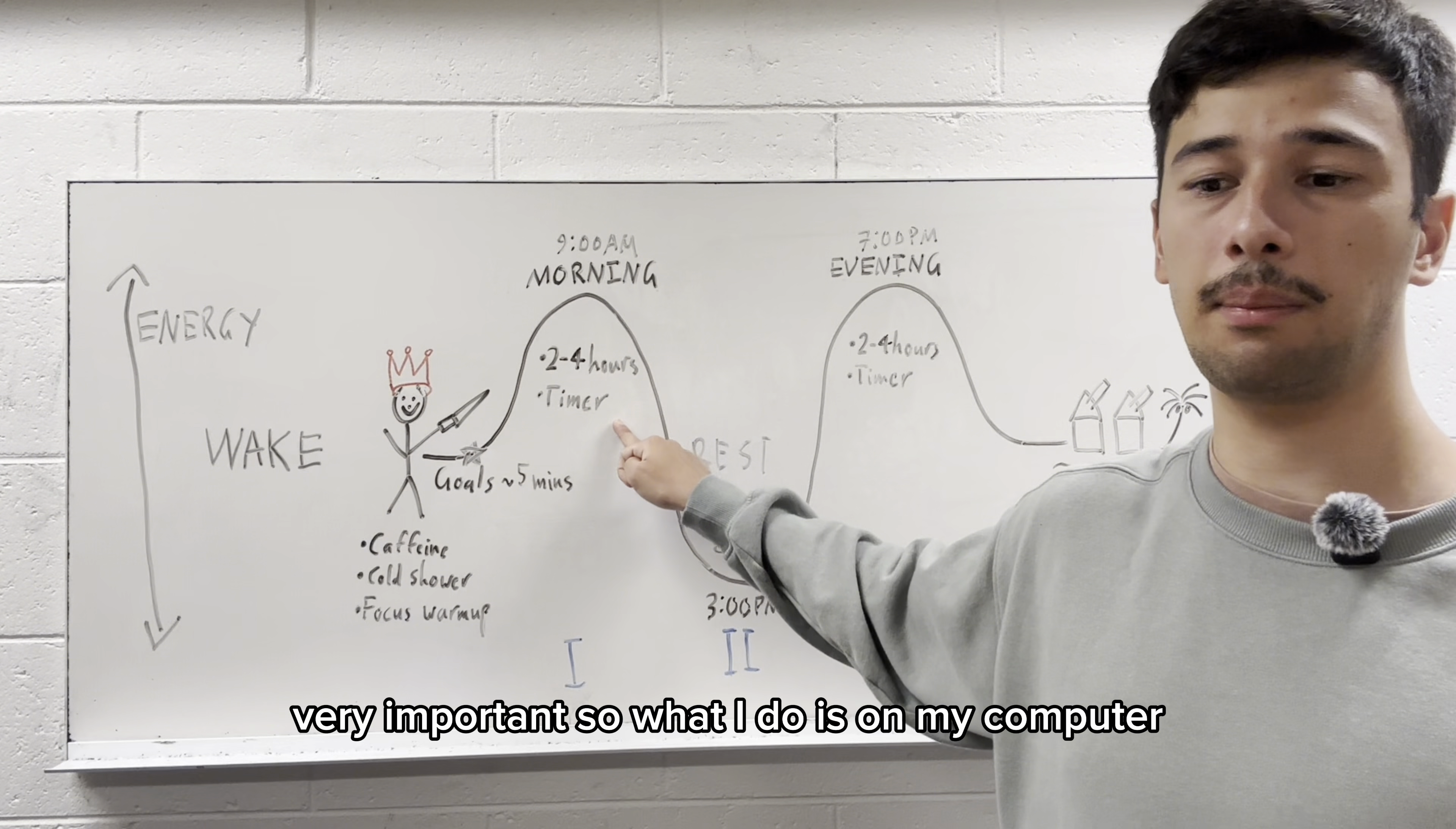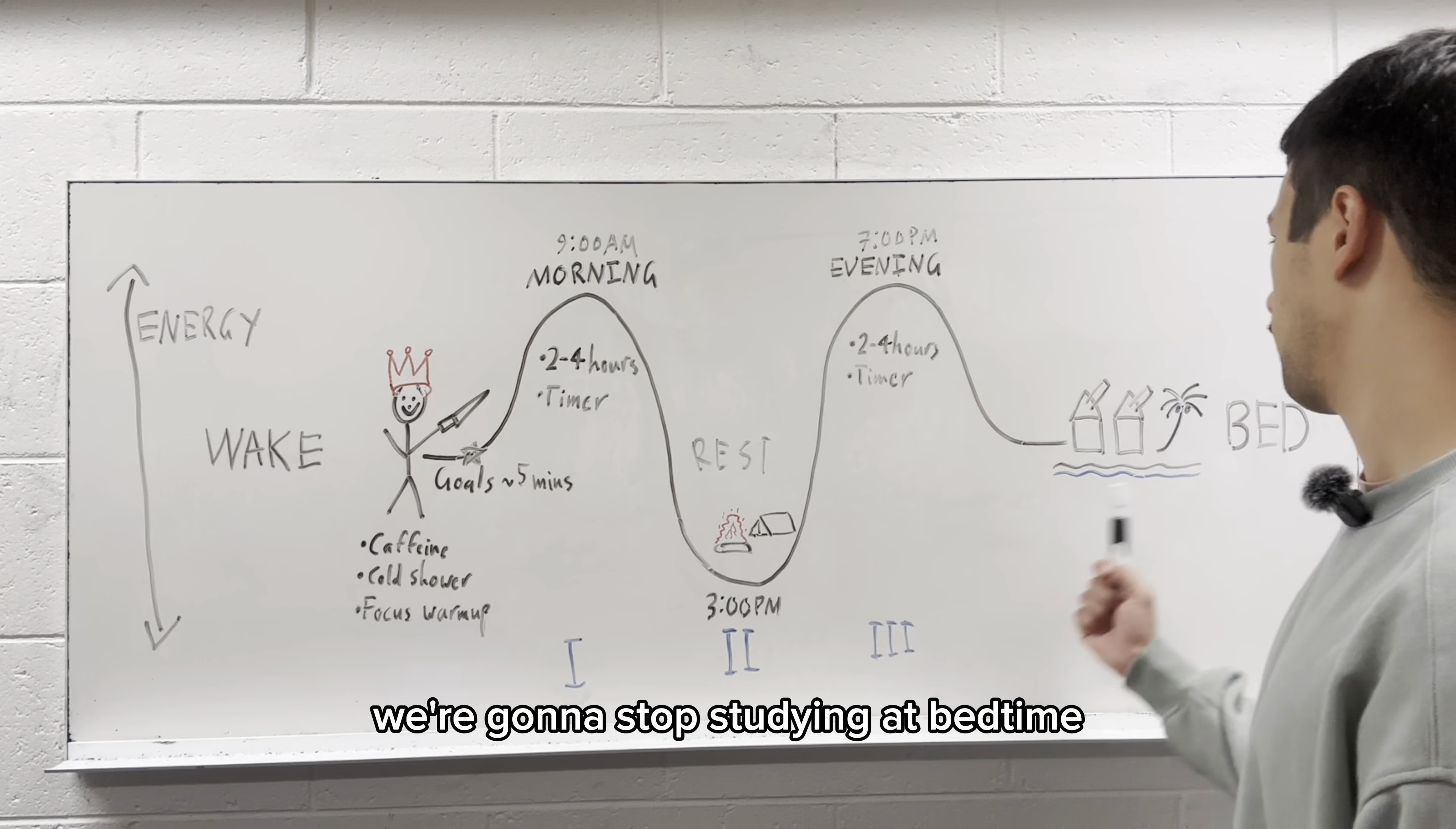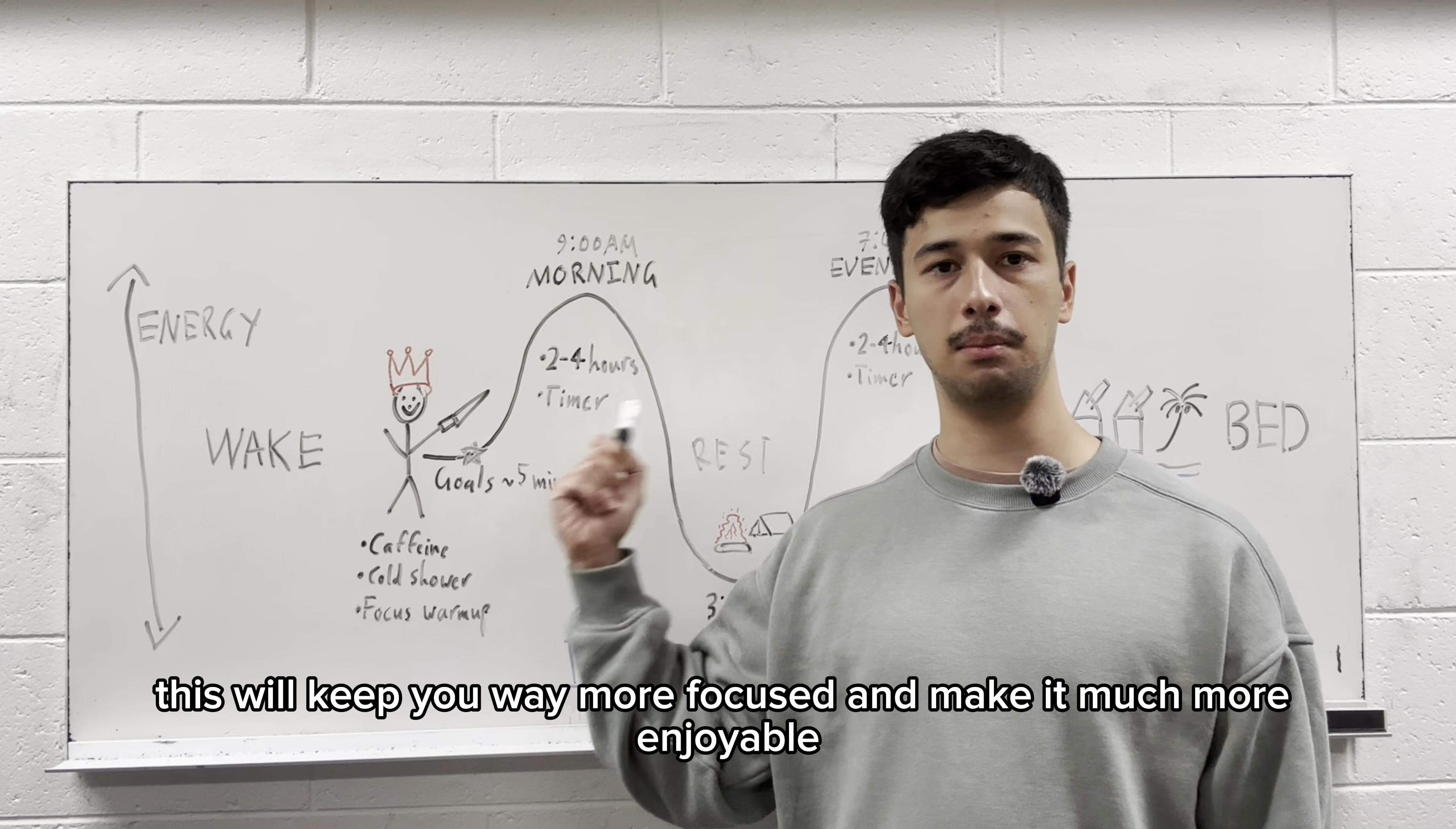Use a timer. This one's very, very important. So what I do is on my computer, I'll literally put a timer in the corner. You can get a physical timer. You can do whatever you want. When you work to a timer, basically what happens is it's kind of like you're on an assembly line. It keeps you, you know, pushing. It gives you like a deadline to work to. The problem is we don't give ourselves deadlines. We tell ourselves, okay, we're going to stop studying at bedtime. And because of that, we have no sense of urgency. So we study with trash focus and we feel hopeless because there's no end point. If you have a timer and you can see like, oh, I've got 90 minutes left, then it gives you that sense of urgency. So you push harder, but it also gives you hope because you can see an end point coming. So work to a timer. This is essential. This will keep you way more focused and make it much more enjoyable.